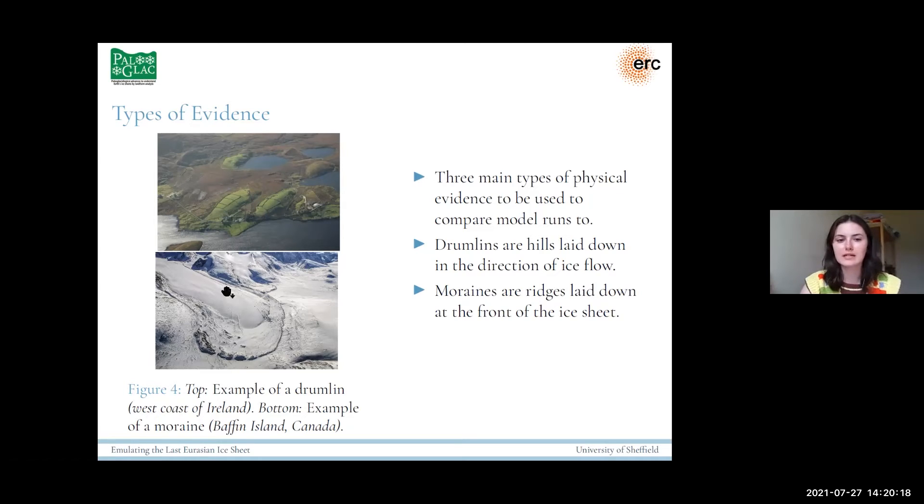We've also got moraines, which are ridges, like pictured on the bottom part of this picture here. They're ridges laid down at the front of the ice sheet. So when the ice sheet is stationary, it drops the deposits and these ridges are formed. So it can give us an idea of an ice extent at certain points in time. And then we've also got geochronological evidence, such as radiocarbon dates and OSL dates. This indicates when the ice sheet couldn't have been covering it, so ice-free timings.